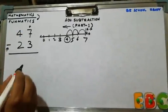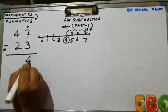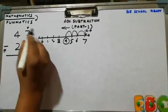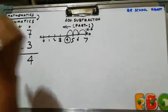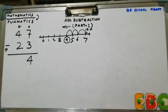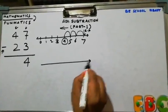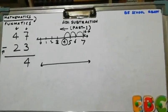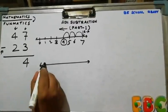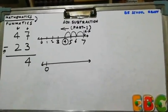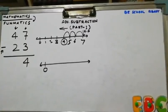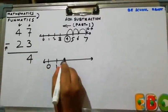Which is at 4. So 7 minus 3 is 4. Now, our pointer moves to the tens place number. Here are 4 and 2. So we have to show the first number at the number line. In this case, it is 4. So 1, 2, 3, 4.